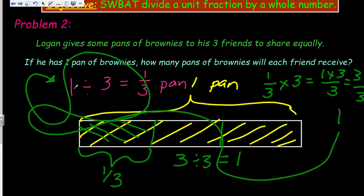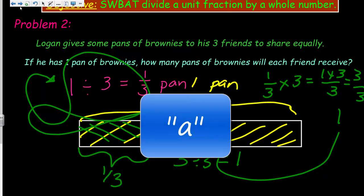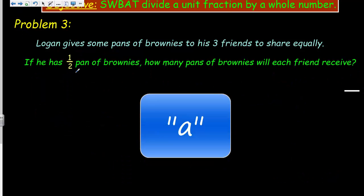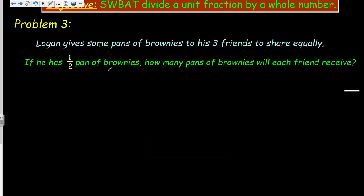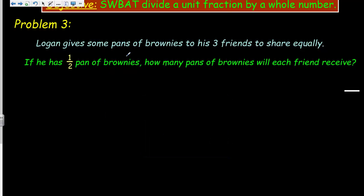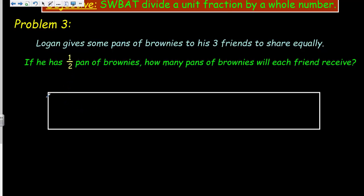Well, let's keep making these problems more difficult. Yes. Oh, no. It's going to be a half pan. It's like we're going to become Jedi Masters. See, Logan, again, gives pans of brownies to his three friends to share equally. If he has a half pan of brownies, how many pans of brownies will each friend receive? Ooh, I see a pattern here. I see what's happening here. Each time, the friends are getting a little bit less because we're starting off with less brownies from the beginning.